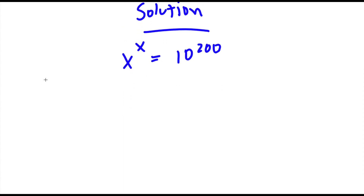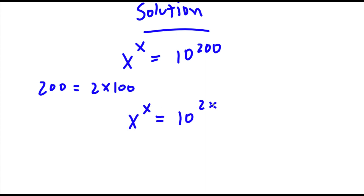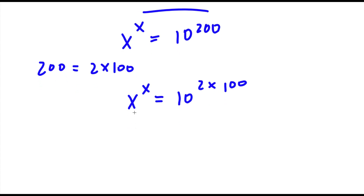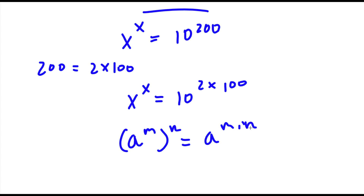Now 200 is equal to 2 times 100. So I'm going to replace 200 with 2 times 100, giving x to the power of x equals 10 to the power of 2 times 100. Now if I have something in the form a to the power of m times n, this is the same thing as a to the power of m to the power of n, and vice versa.